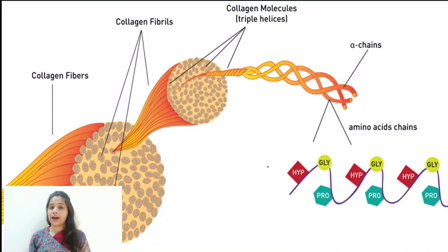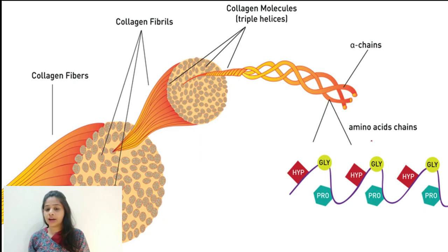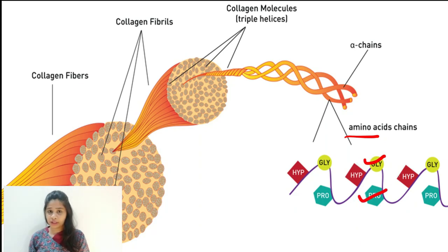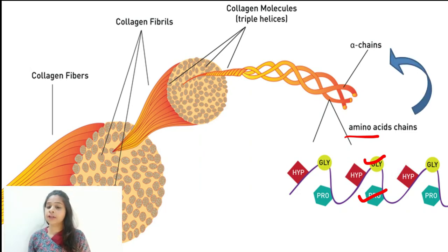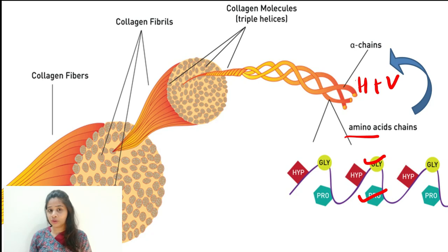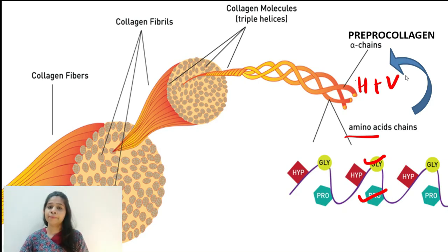Collagen fibers are made up of proteins, and as with all proteins, the building blocks are amino acids. In the case of collagen, the most common amino acids are glycine and proline, which along with other amino acids form the amino acid chain. This chain undergoes hydroxylation in the presence of vitamin C to form single-unit alpha chains, otherwise called pre-pro collagen.